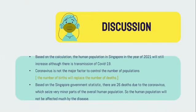Discussion. Based on the calculation, the human population in Singapore in 2021 will still increase although there is transmission of COVID-19. Thus, coronavirus is not the major factor controlling population numbers, as the number of births replaces the number of deaths. There are 26 deaths due to coronavirus, which is a very minor part of the overall human population, so the human population will not be affected much by the disease.